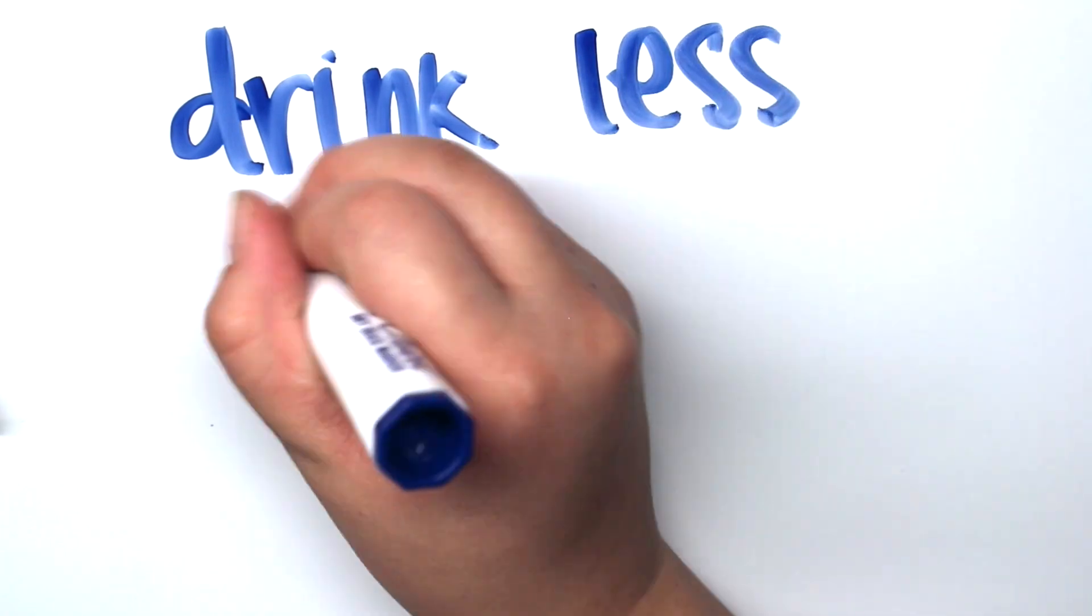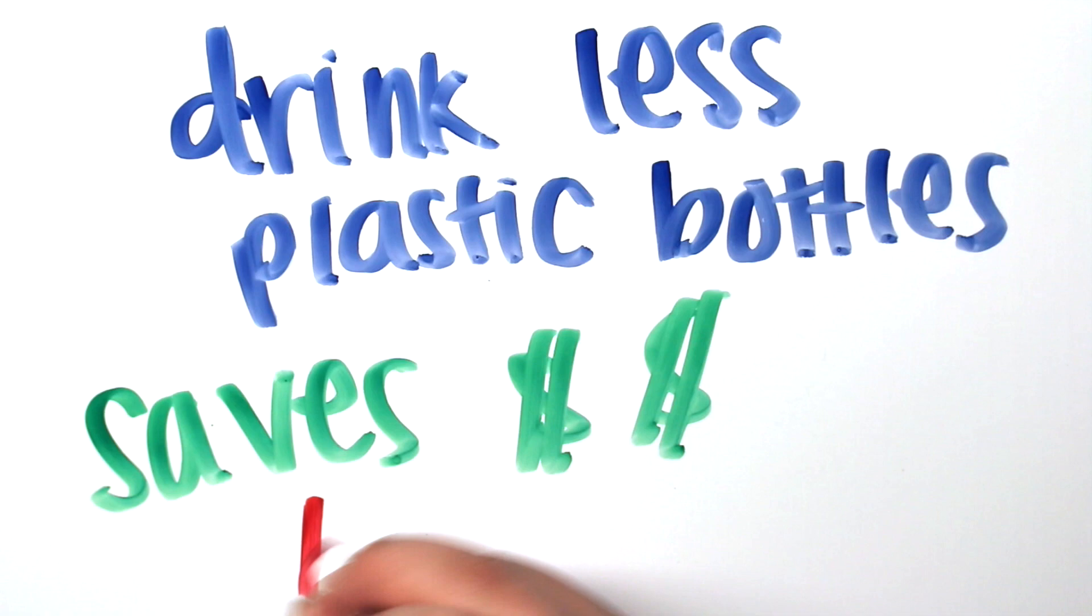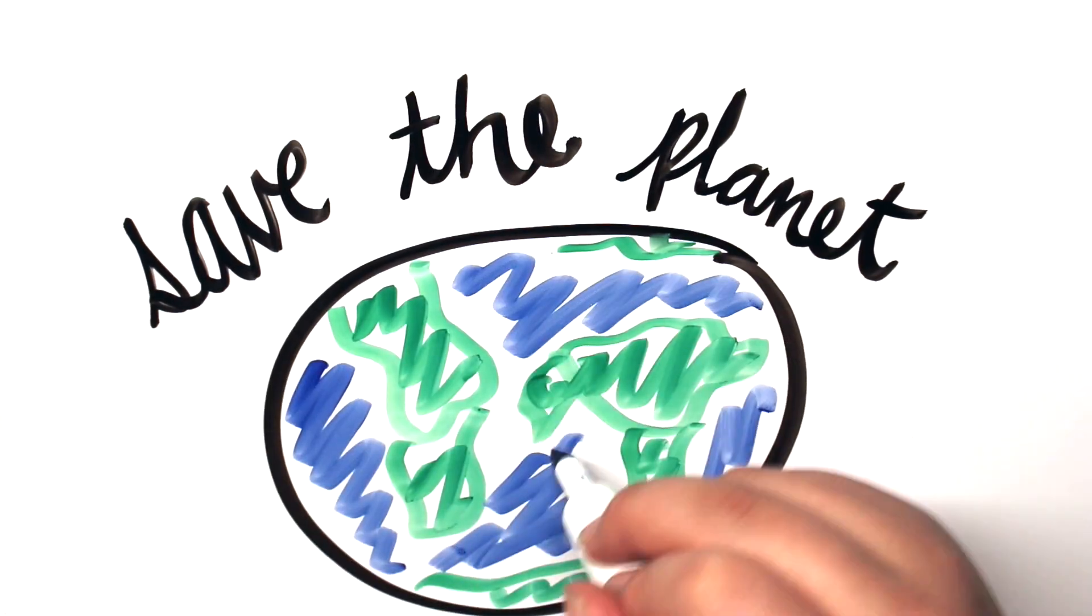Start by saving the environment by drinking less water out of plastic bottles. It saves you not only money, but also your health. Go out and buy yourself a reusable water bottle and save the planet one plastic bottle at a time.